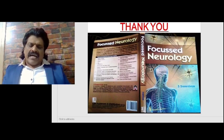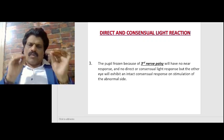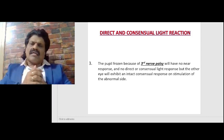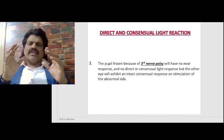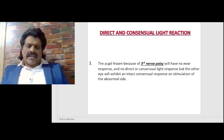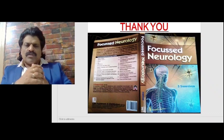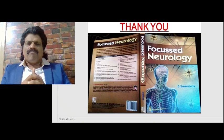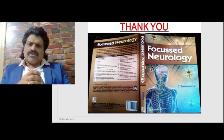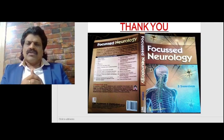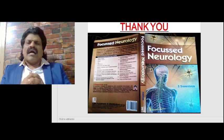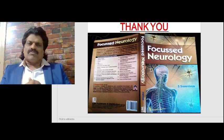These are the fascinating concepts of direct and consensual light reaction. By throwing light on one side and observing the reaction ipsilaterally and contralaterally, and likewise throwing light on the opposite side, we can determine whether the afferent — the second nerve — or the efferent — the third nerve — is affected. These concepts are also covered in question-and-answer format in my book Focused Neurology, available online from leading booksellers including Amazon. Please like, share, and subscribe to my YouTube channel Dr. Srinivas Medical Concepts. Thank you, bye.